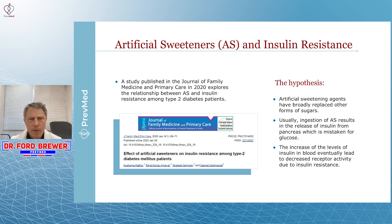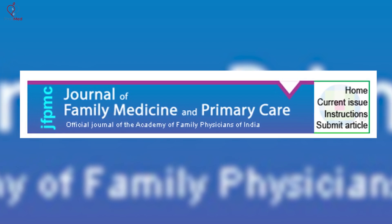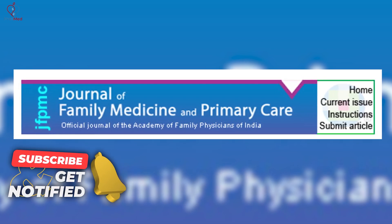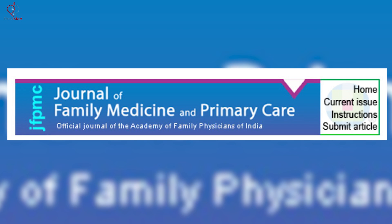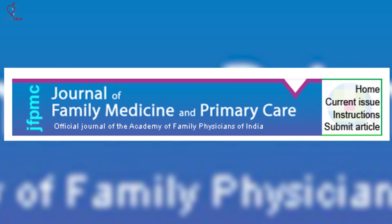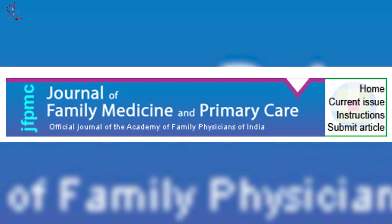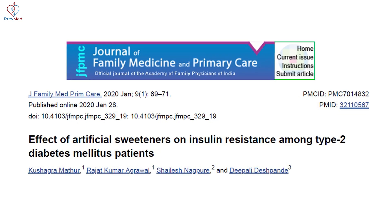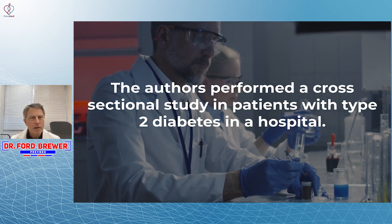So let's talk about the study. First of all, where did we find it? The Journal of Family Medicine and Primary Care — the official journal of the Academy of Family Physicians of India. Not a bad journal, but clearly not the New England Journal of Medicine, not one of the top five journals in the world. If you have information that's both important and very solid, you're going to go for the best journal you can. The title: Effect of Artificial Sweeteners on Insulin Resistance Among Type 2 Diabetes Patients. The authors performed a cross-sectional study — very similar to the type we talked about before.